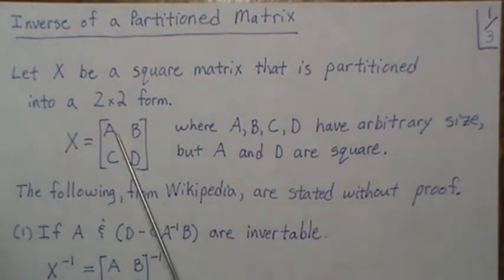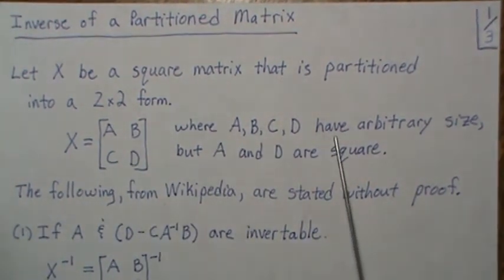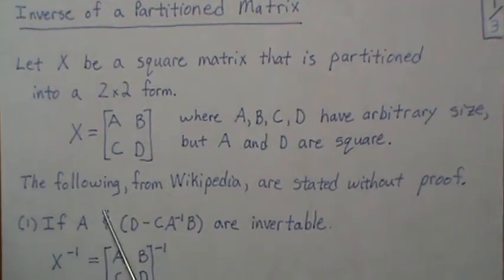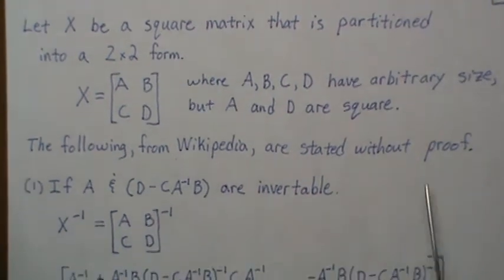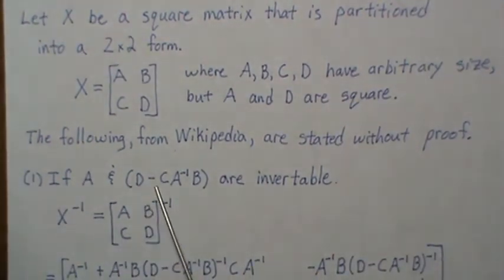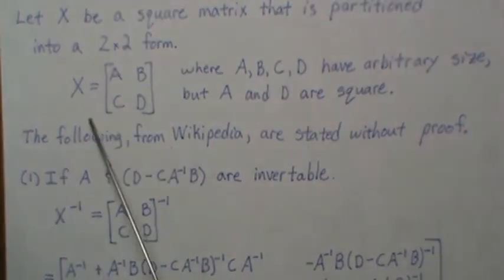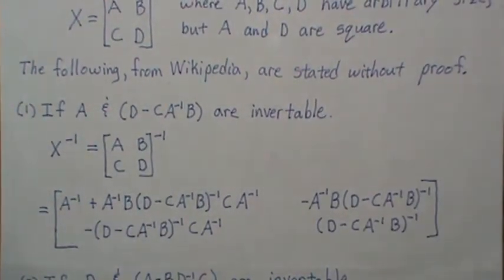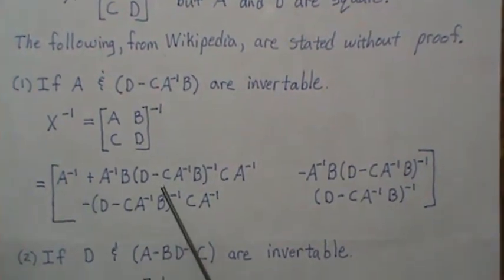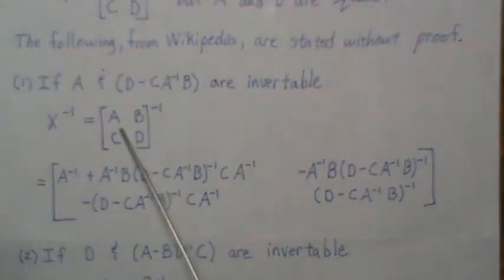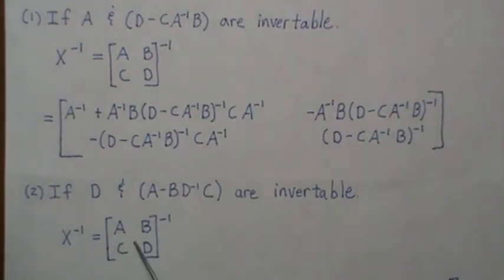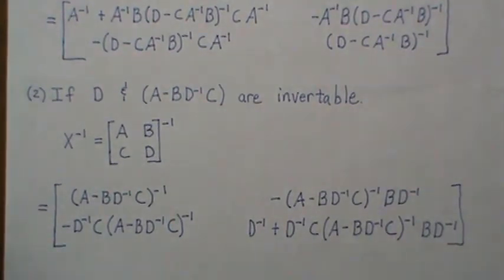Let X be a square matrix that is partitioned in a 2-by-2 form: [A B; C D], where A, B, C, and D have arbitrary sizes, but A and D are square — that's the only requirement. From Wikipedia, stated without proof: if A and (D minus C A-inverse B) are invertible, then X-inverse can be written as a certain matrix. If A is not invertible, we can use a second result: if D and another Schur complement matrix are invertible, then X-inverse can be written in an alternate form.